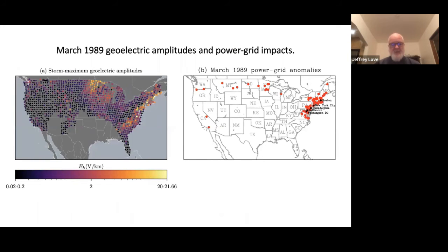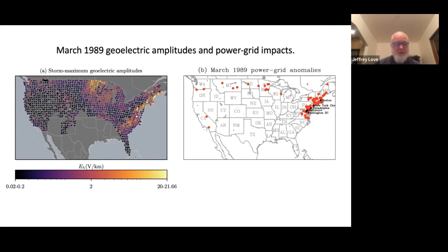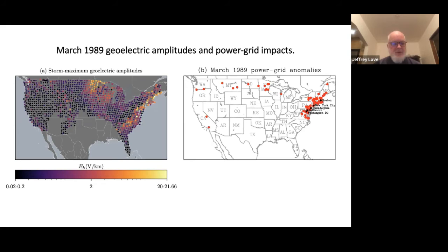I'm going to jump to some conclusions from a lot of work. On the left is a hazard map showing the geoelectric amplitude realized during the March 1989 storm — the geoelectric field generated in the Earth's interior by the storm's magnetic activity. It shows very clearly that the geoelectric field is quite high amplitude in the northern Midwest and in the Eastern United States, and very low amplitude across most of the rest of the United States. This is useful information for the power grid industry — it tells them where to concentrate their efforts to make the system more resilient.